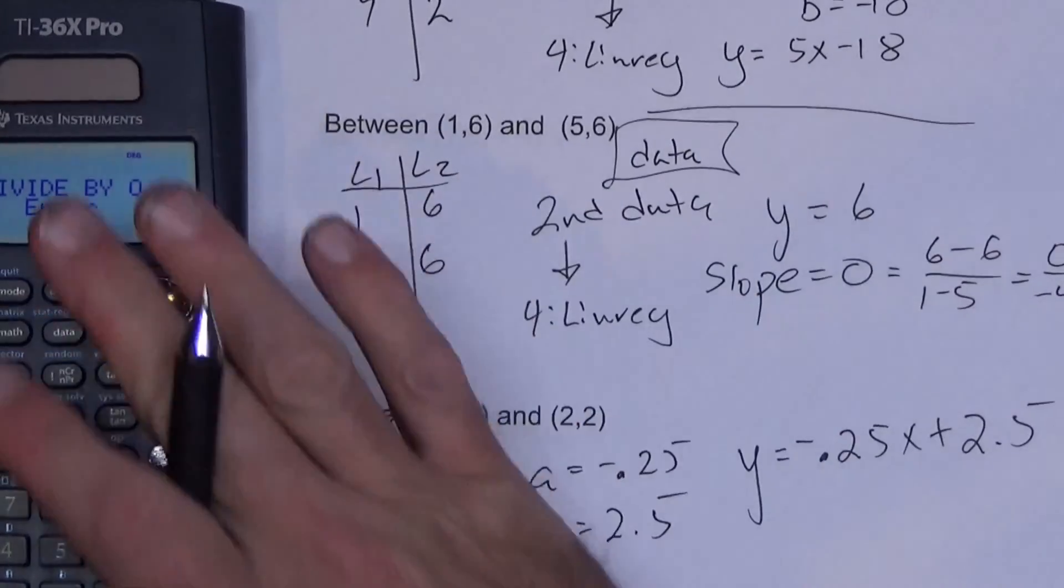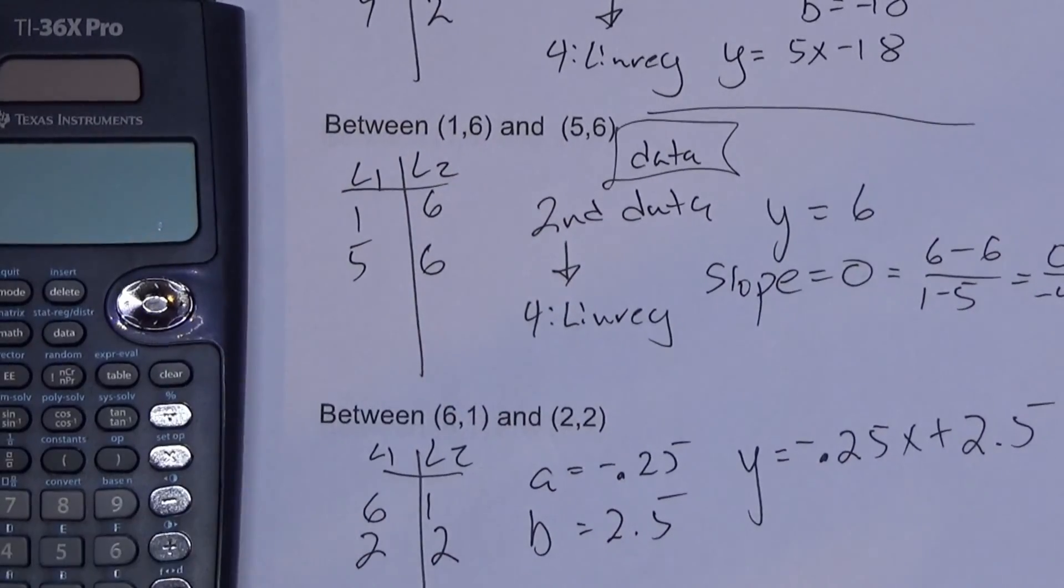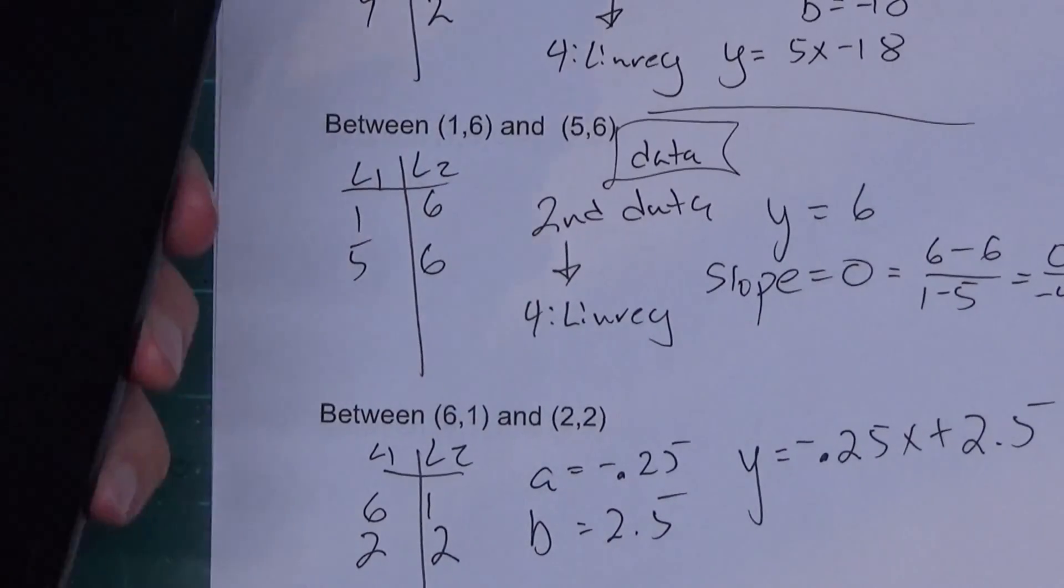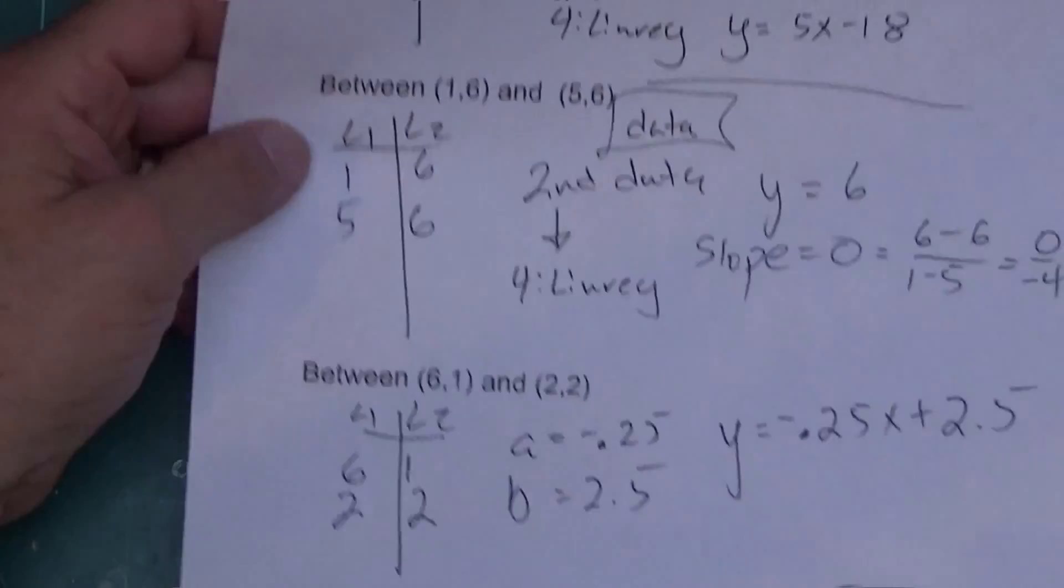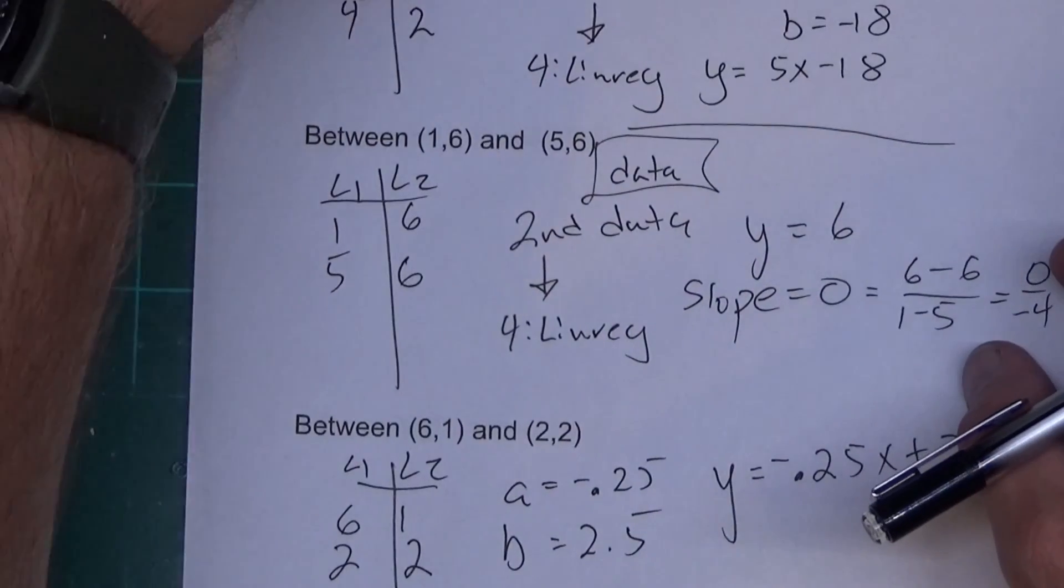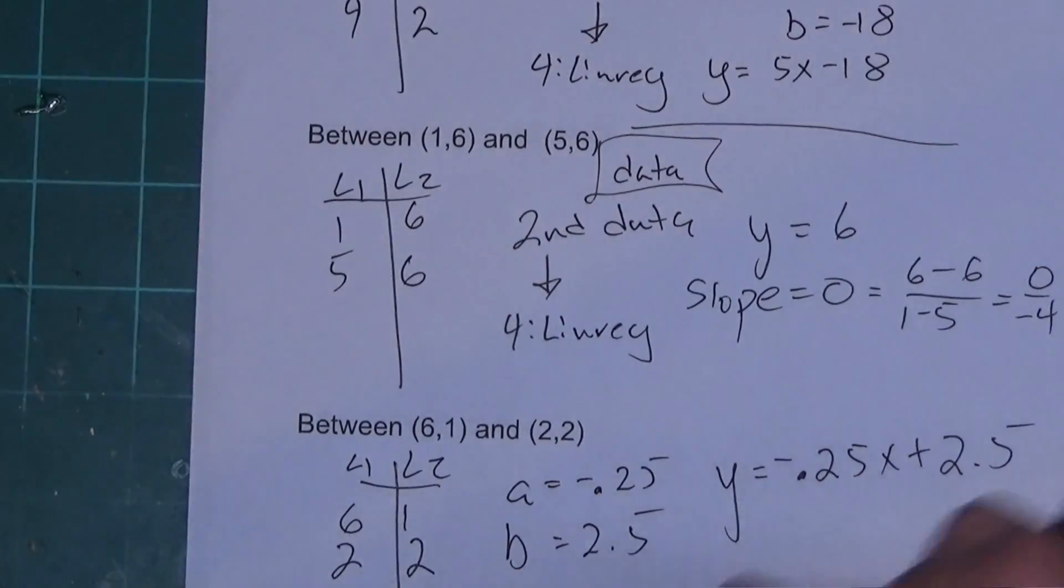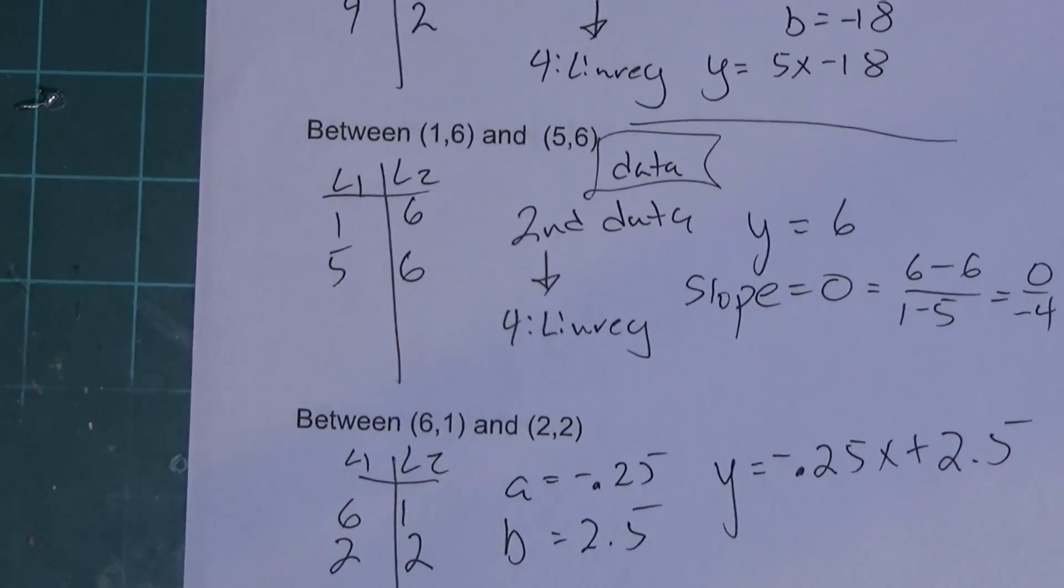So there you go. Just a quick rundown how to find the equation of a line with the TI 36. That should help with some math classes here and there. There's more to the equation of a line than we just did, but I'm just trying to do a basic equation of a line at this point. Okay. Hope you all enjoy and hope you find that useful.